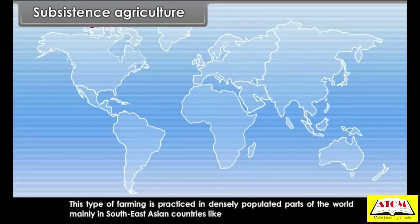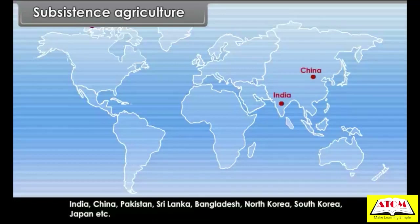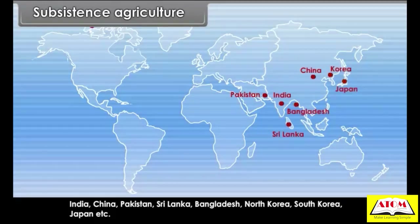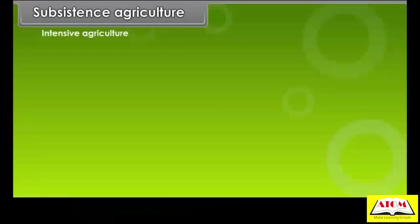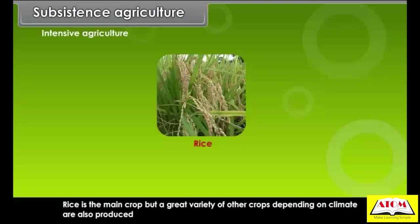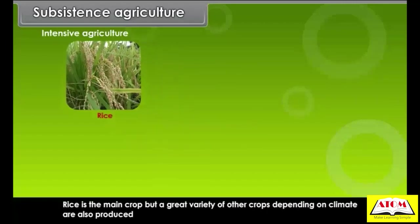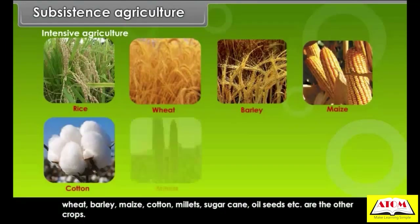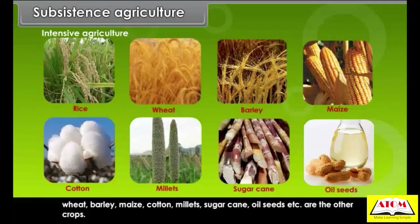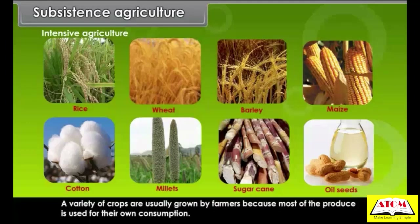This type of farming is practiced in densely populated parts of the world, mainly in Southeast Asian countries like India, China, Pakistan, Sri Lanka, Bangladesh, North Korea, South Korea, Japan, etc. A variety of crops are usually grown by farmers because most of the produce is used for their own consumption.